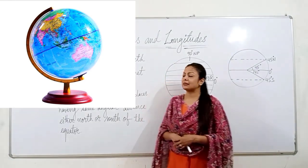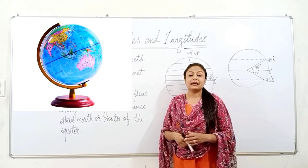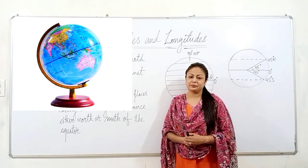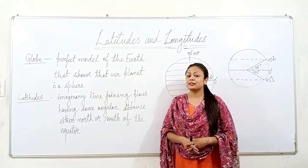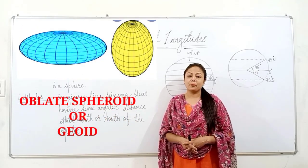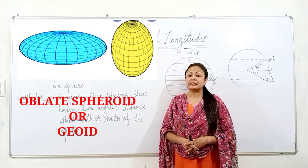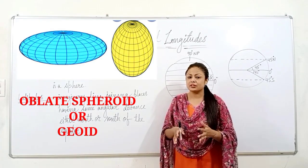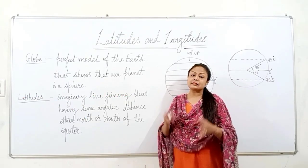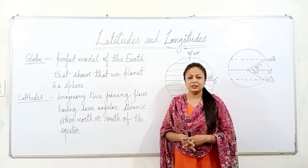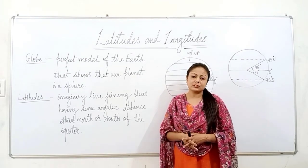So let's look at the picture. The globe is a perfect model of earth and it represents earth to be a perfect sphere. Whereas our planet earth in reality is not a perfect sphere. It is an oblate spheroid or geoid, which means that it is bulging at the equator and flattened at the poles.